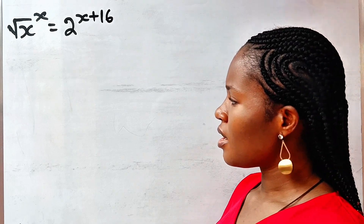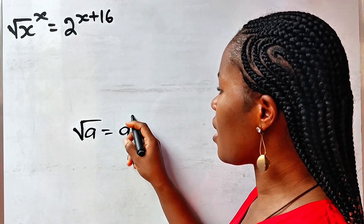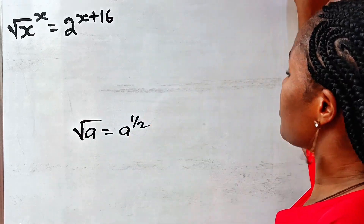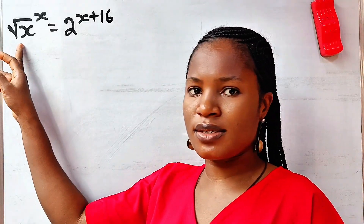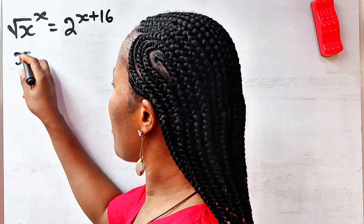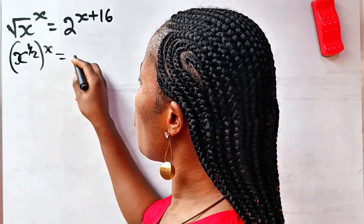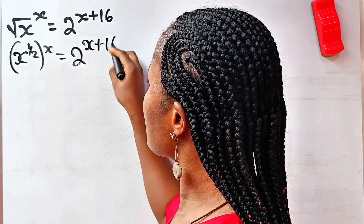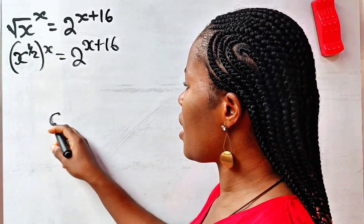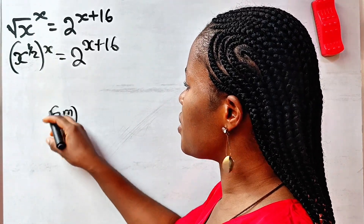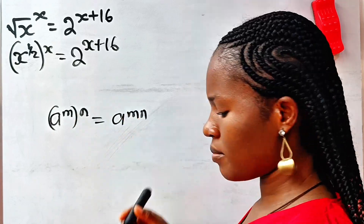First thing first: the square root of any number — square root of a — is equal to a to the power of half. So we are going to write this as x to the power of half, raised to the power of x, is equal to 2 to the power of x plus 16. Now, recall that a to the power of m raised to the power of n is also equal to a to the power of m times n.